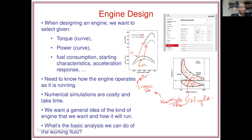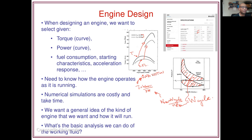The power W-dot is the power developed by the engine, and that power is just two pi times the torque times N, the revolution speed — or it's just the work done per revolution times the number of revolutions per time.